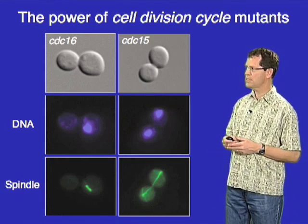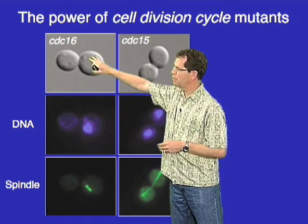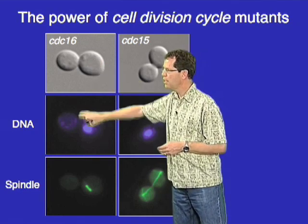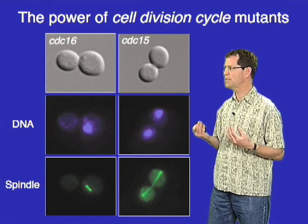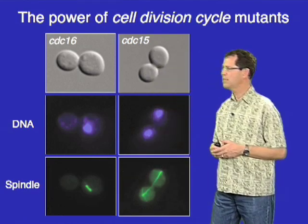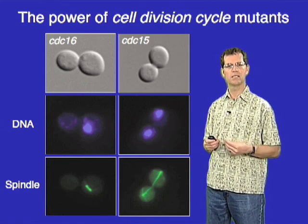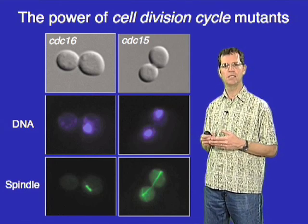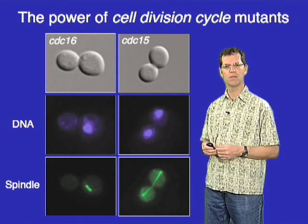These were the so-called cell division cycle or CDC mutants. CDC16, for example, causes arrest in mitosis at high temperature. DNA staining shows this cell has not yet segregated its chromosomes, so it is arrested before anaphase; the spindle reveals a short metaphase spindle, indicating CDC16 mutants arrest in metaphase prior to the onset of anaphase. Indeed, CDC16 encodes a component of an important protein complex required for progression through the metaphase to anaphase transition.